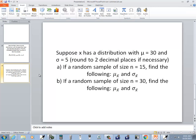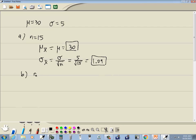Now for b. Part b says find the same items when n is equal to 30. Well, mu sub x bar is again just equal to mu, which is 30.